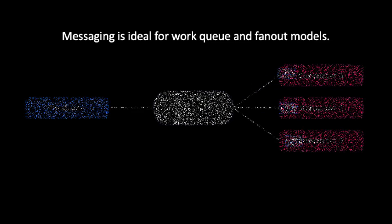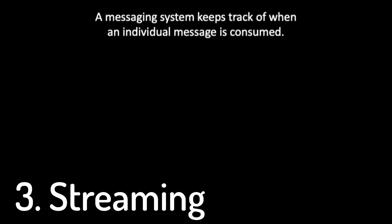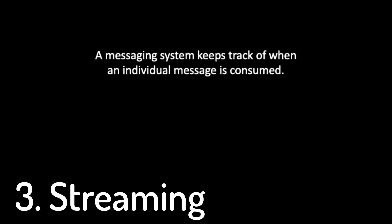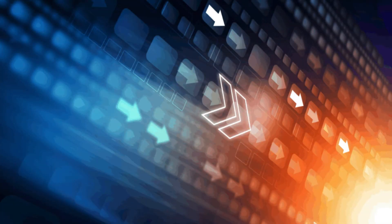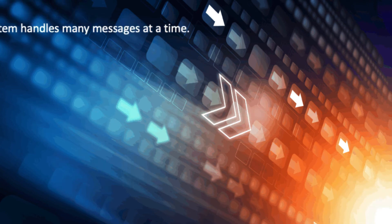Number three: event streaming. While a messaging system keeps track of whether a single message has been consumed, a streaming system handles many messages at the same time.